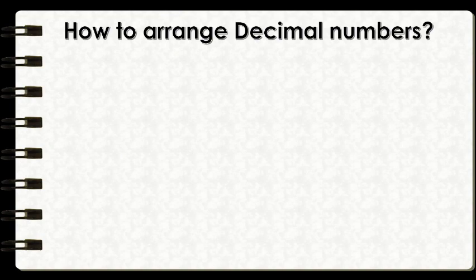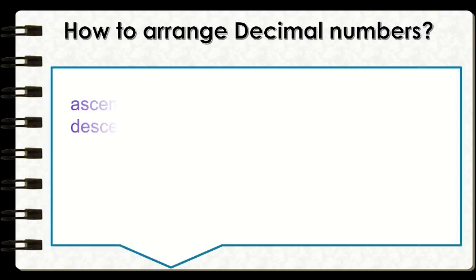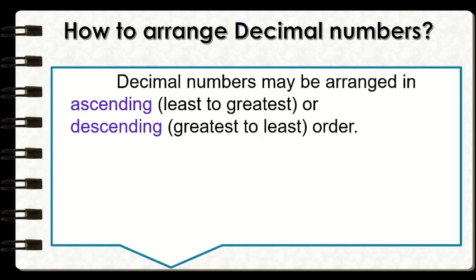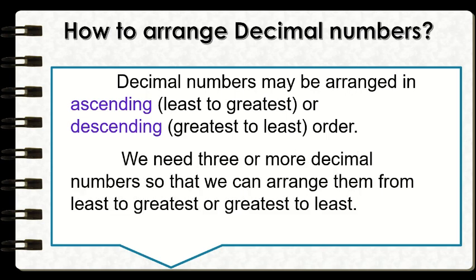Next, how are we going to arrange decimal numbers? We can arrange decimal numbers in different ways — it can be in ascending or in descending order. Ascending is another term for least to greatest order, while descending is the term for greatest to least order. We need three or more decimal numbers to arrange them from least to greatest or greatest to least.